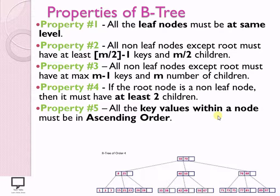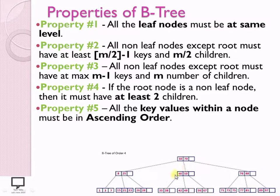Property 5 deals with the order or sequence of key values. All keys present in every node should follow ascending order within itself. For example, a node with values 71, 73, and 75 — all values follow ascending order.